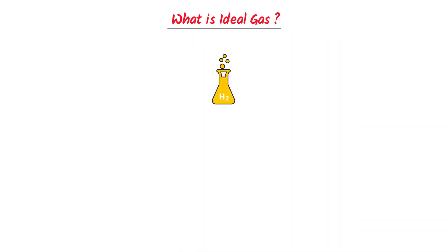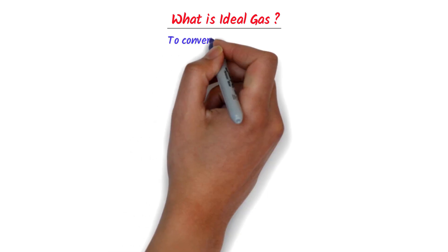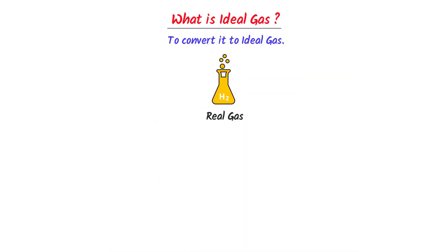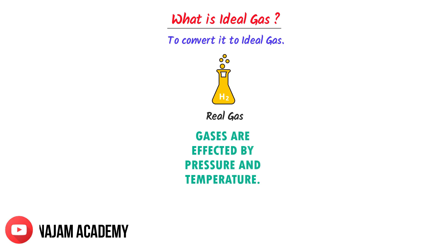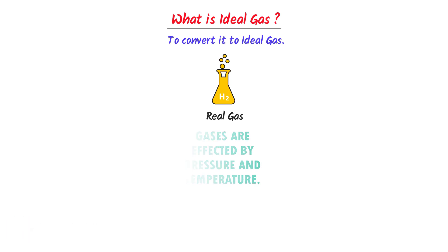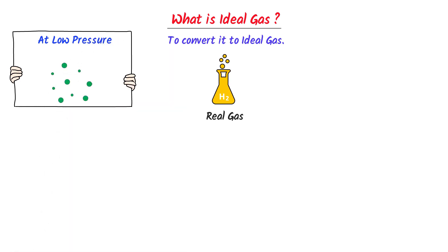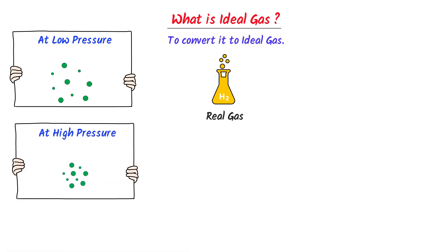Now, what is ideal gas? Well, consider hydrogen gas — we know that it is a real gas. I am interested in making hydrogen gas behave like an ideal gas, so I have to change certain conditions for it. We know that gaseous behavior is affected by pressure and temperature. At low pressure, molecules of hydrogen gas are far away from each other, while at high pressure, molecules are near to each other. In contrast, at low temperature, molecules are nearer to each other, while at high temperature, molecules are far away from each other.